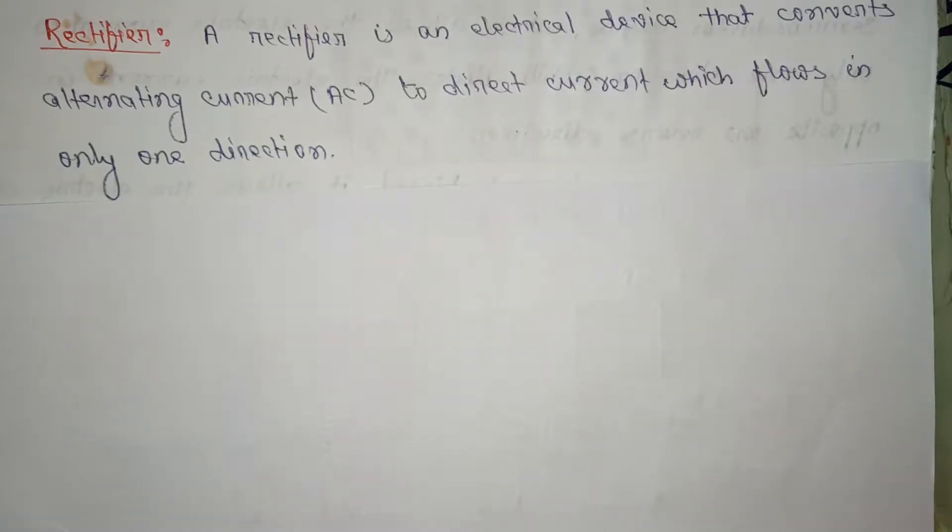Hi friends, today I am going to discuss the basic definitions of electronics. First, what is a rectifier? A rectifier is an electrical device that converts alternating current to direct current which flows in only one direction.